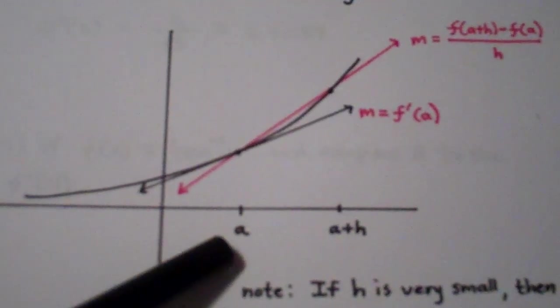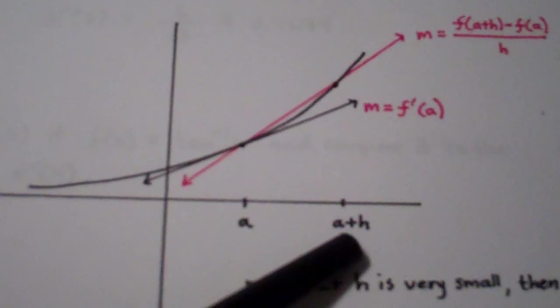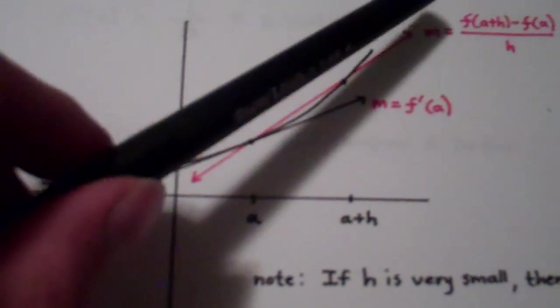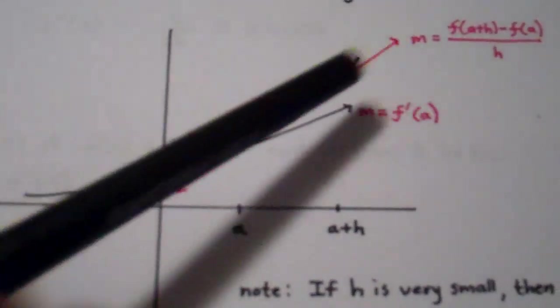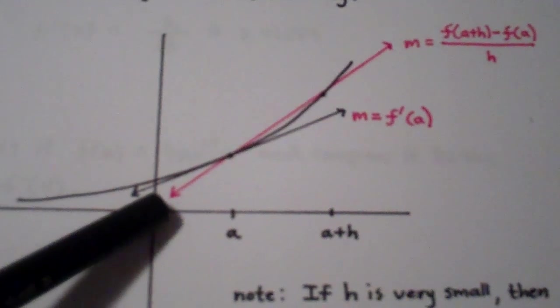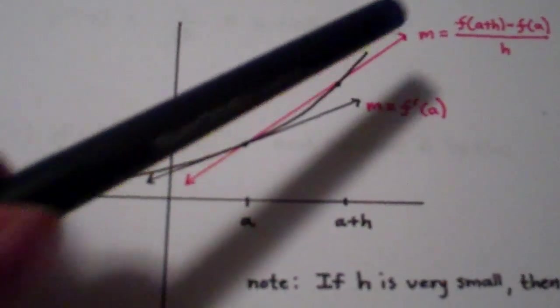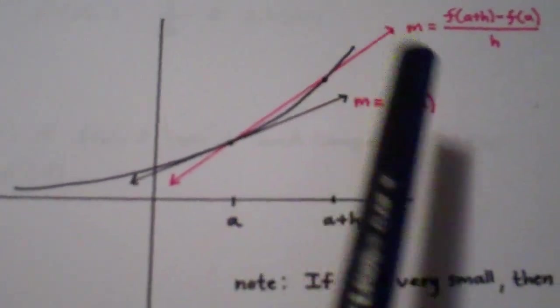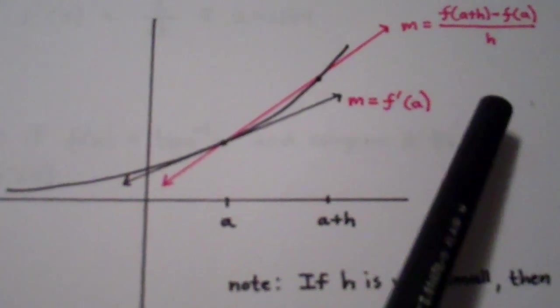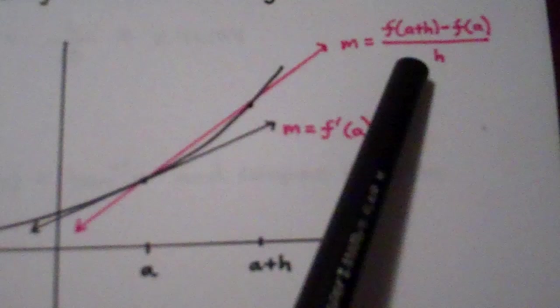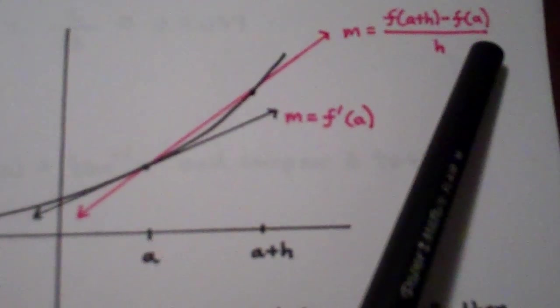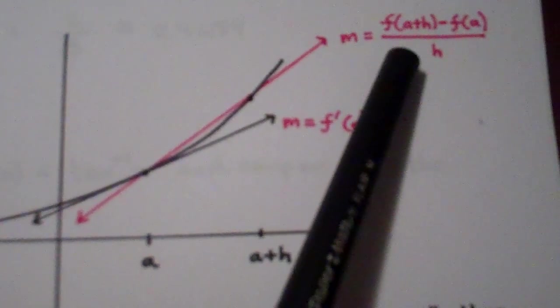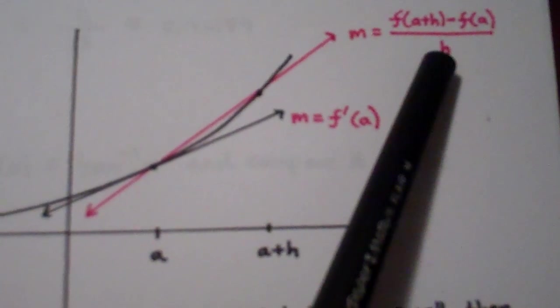And then I went h units beyond a and I drew the secant line. Remember that whenever you draw a line through two points on the graph it's called the secant line. And the slope of that secant line of course is going to be [f(a+h) - f(a)] divided by [(a+h) - a], which will just be h.